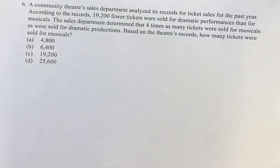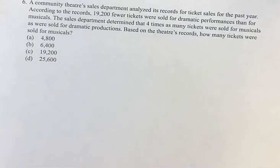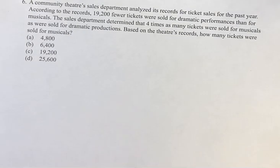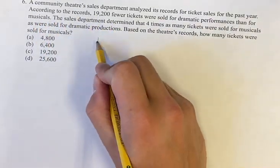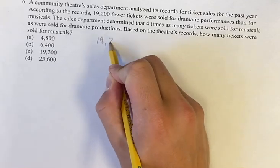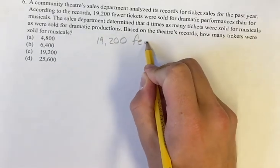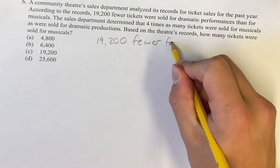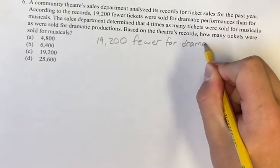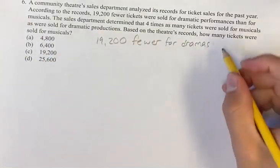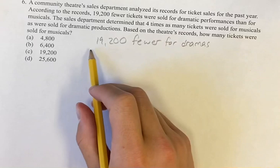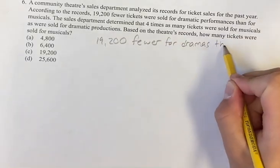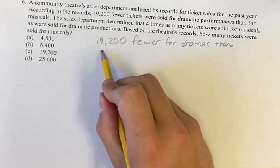Hello and welcome back to another video. This problem looks at the sales department of a community theater who analyzed their records for ticket sales. We're told that 19,200 fewer tickets for dramatic performances were sold than for musicals — so 19,200 fewer for dramas than musicals.